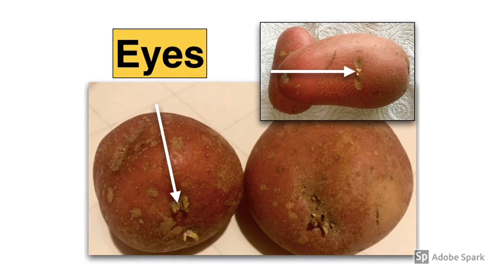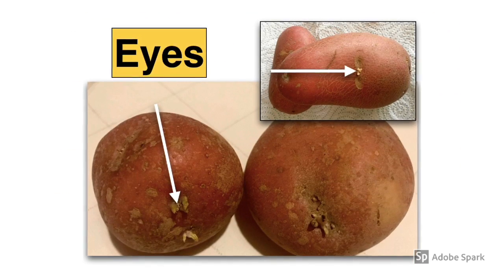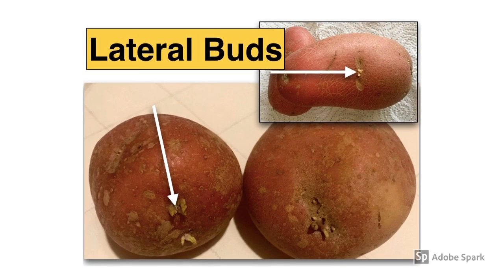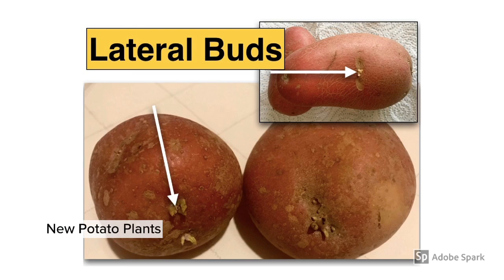When you leave potatoes for a few days, you'll notice that they start to develop little growths known as eyes. These are lateral buds giving rise to new shoots. This is how these swollen tips of underground shoots — these potato tubers — can give rise to new potato plants.